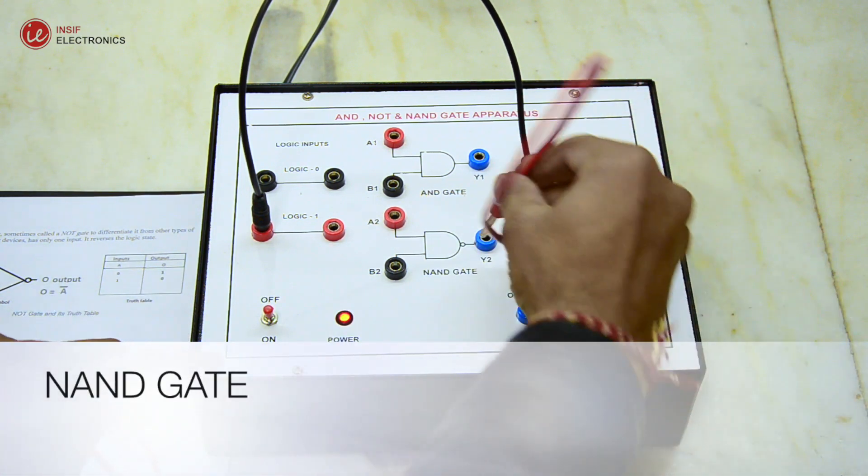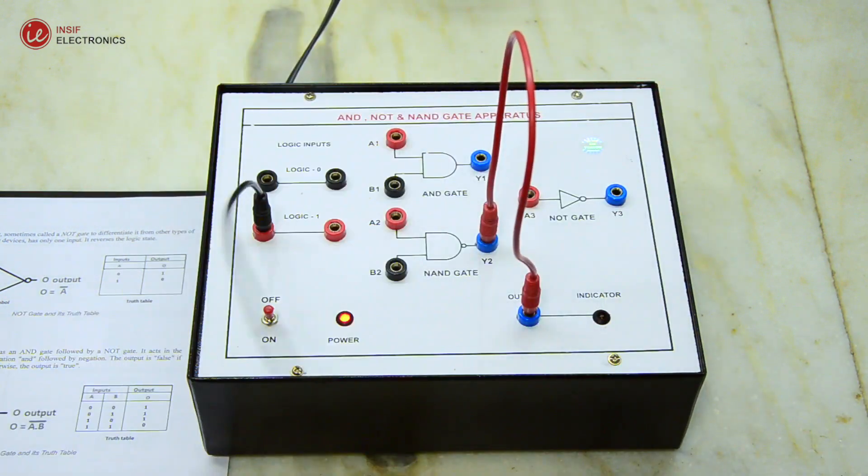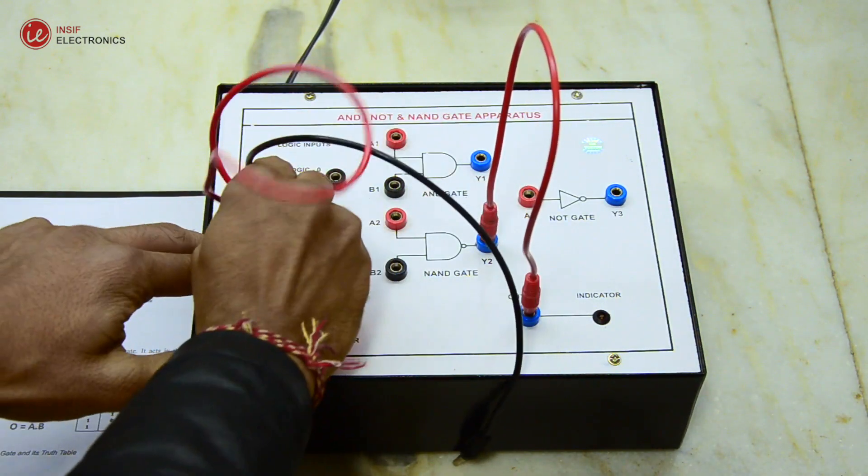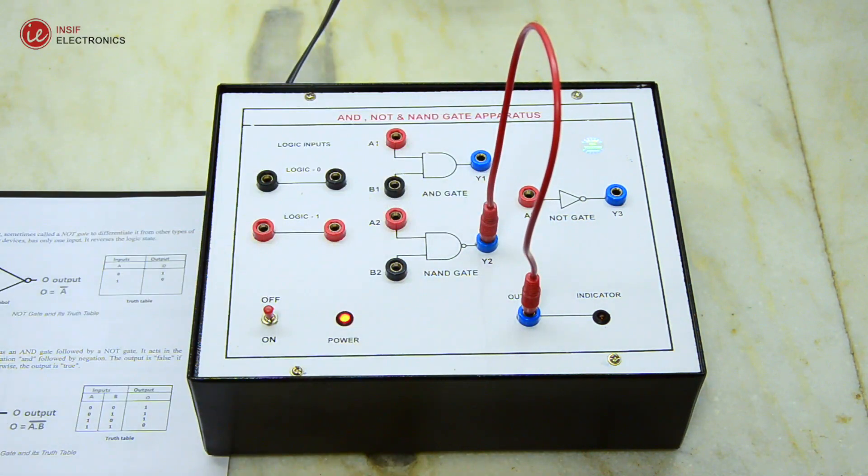Now next is the NAND gate. The NAND gate operates as an AND gate followed by a NOT gate. It acts in the manner of the logical operation AND followed by negation.